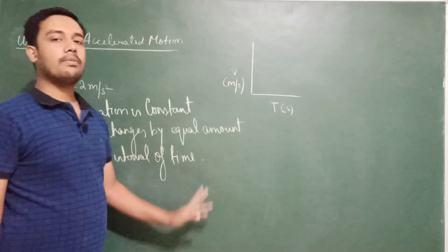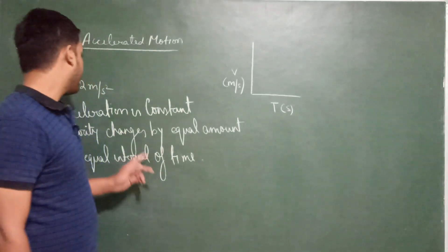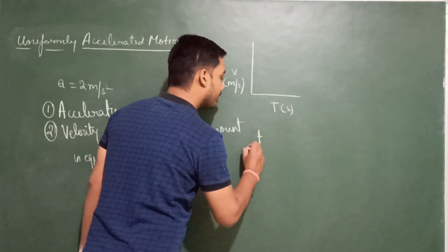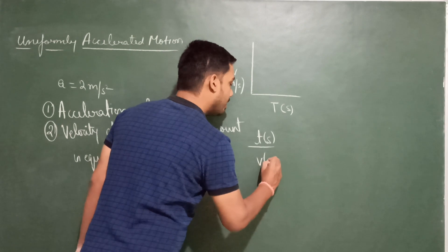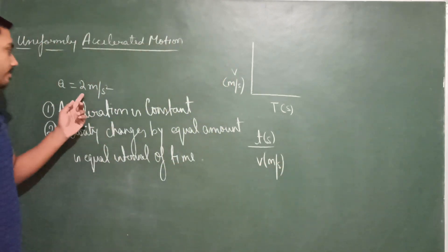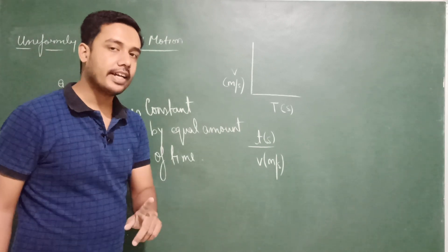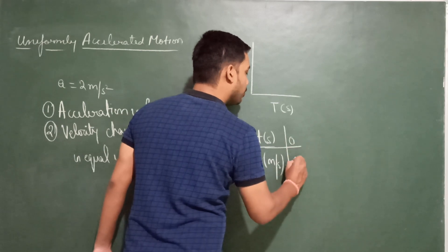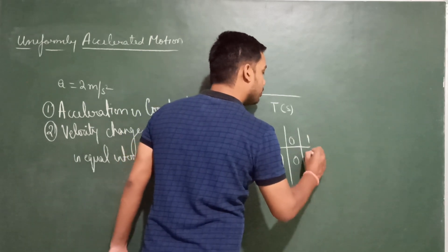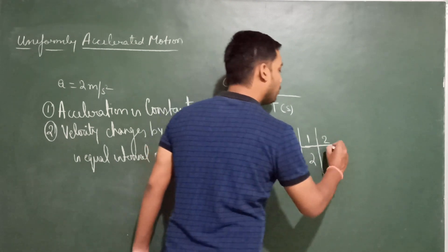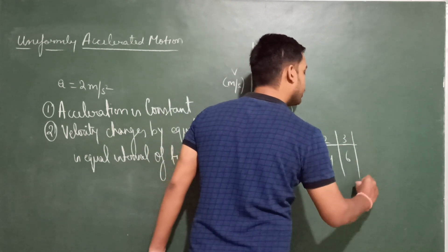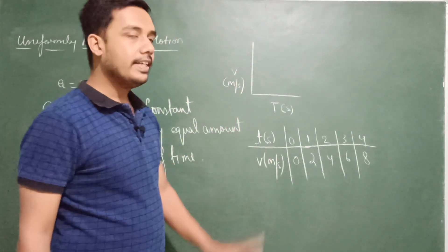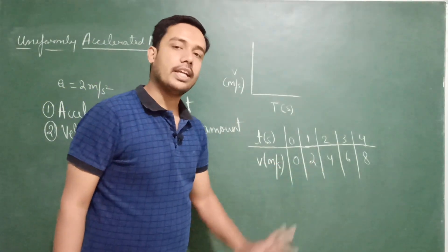Velocity changes by equal amount in equal interval of time. Let me make the velocity-time graph. Time is in seconds and velocity is in meters per second. Acceleration is 2 m/s², so: time 0 — velocity 0; time 1 — velocity 2; time 2 — velocity 4; time 3 — velocity 6; time 4 — velocity 8. Every second the velocity is increasing by equal amount in equal interval of time.